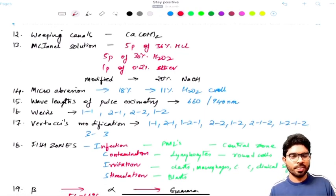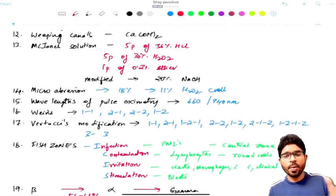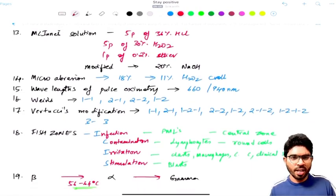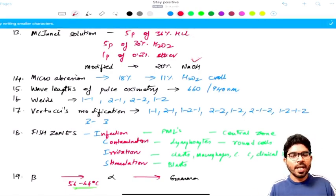Next, we need to talk about Mocan's solution. So Mocan's solution basically consists of 5 parts of 36% of NaOCl and 5 parts of 30% of H2O2. 30% of H2O2, 30 to 35% of H2O2 is called as superoxol - we are very familiar. Superoxol is basically 30 to 35% of H2O2 by weight or 100% of oxygen by volume. This means 30 to 35% of H2O2 by weight is going to release 100% of oxygen by volume. And it contains one part of 0.2% of ether which is basically used to remove the debris. Whereas after a few days, the Mocan's solution is being modified in which 36% of HCl is being replaced by 20% of NaOH.